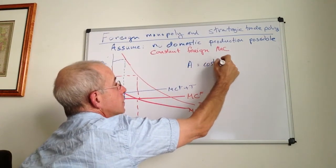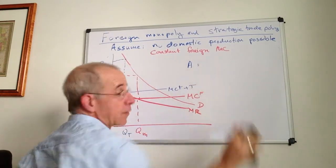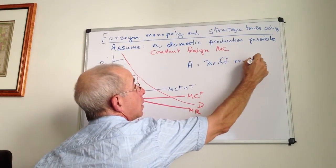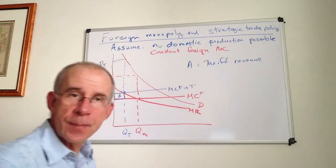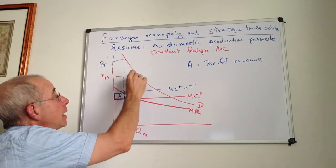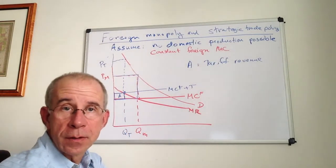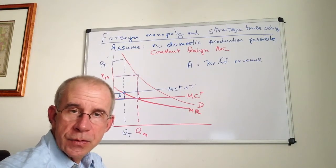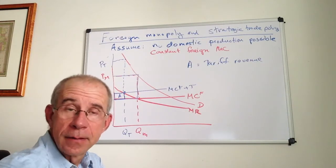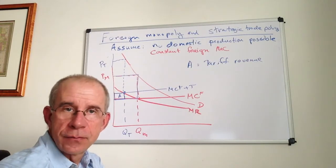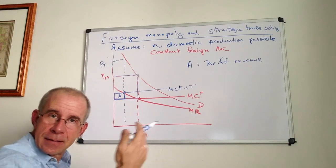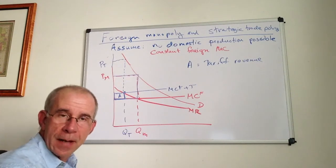Area A is the tariff revenue gained to the domestic treasury out of the profits of this foreign monopolist. The foreign monopolist used to be making this amount in this market. Now there's a reduction in the amount sold and the foreigners have to pay a tariff to access this market. That is the area represented by A, the revenue to the government paid for by the foreign monopolist.